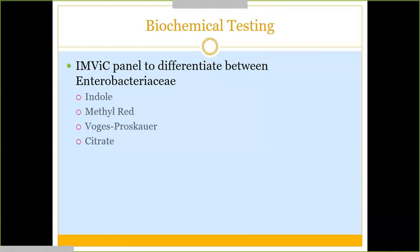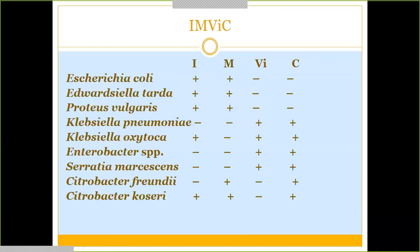Once we determine it's oxidase negative, the next step to identify which Enterobacteriaceae it might be is the IMViC panel — four tests: Indole, Methyl Red, Voges-Proskauer, and Citrate (the small 'i' is just for pronunciation). For example: E. coli is positive for indole and methyl red, but negative for Voges-Proskauer and citrate. Klebsiella pneumoniae has a different pattern. These results help differentiate and narrow down which organism is present.